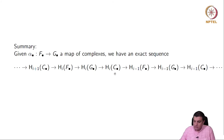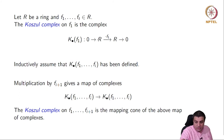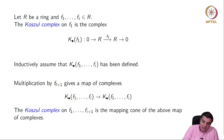Now we come to defining Koszul complexes. Given a ring R and t elements in R, the Koszul complex on a single element f_1 is the complex with R at position 1 and R at position 0, connected by multiplication by f_1. Inductively, assuming we have defined it for i elements, multiplication by f_{i+1} gives a map of complexes, and the Koszul complex on f_1 through f_{i+1} is the mapping cone of that map of complexes.